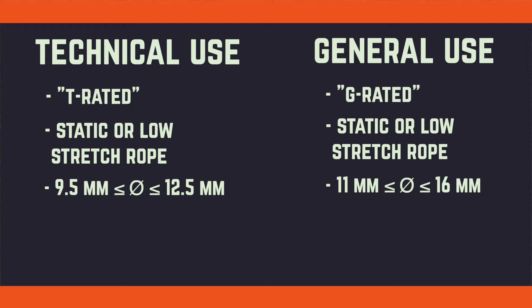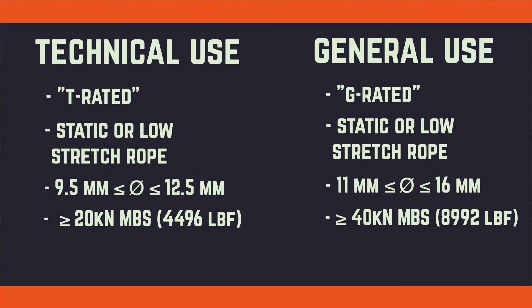Technical use ropes must have at least a 20 kilonewton minimum breaking strength — that's just under 4,500 pounds force. General use must have at least 40 kilonewtons minimum breaking strength, just under 9,000 pounds force. Keep in mind these are just minimum requirements, so you could have a technical use rope with a 25, 30, or even 35 kilonewton minimum breaking strength.